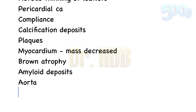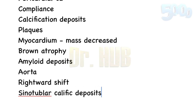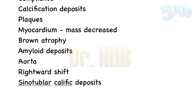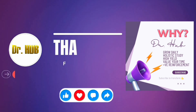Now let's look at the aorta. In the aorta, there is a dilated ascending aorta with a rightward shift, and there is an elongated thoracic aorta and it's tortuous. There are sinotubular calcific deposits as well as elastic fragmentation and collagen accumulation, and atherosclerotic plaques as well.